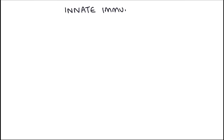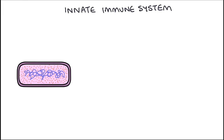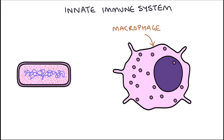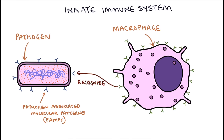First let's look at how the innate immune system provides an immediate response to infection. The first to respond are the macrophages. They recognize pathogens by specific characteristics that occur on pathogens but don't occur on cells of the body. These characteristics are called pathogen associated molecular patterns or PAMPs. They recognize PAMPs using various receptor types including toll-like receptors.